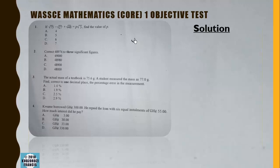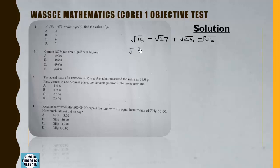We have 1c November/December 2017 Paper 1, answering the objective test. The first question: if √75 - √27 + √48 = p√3, find the value of p. To solve, we remove all perfect squares from each term. √75 is the same as √(25×3).